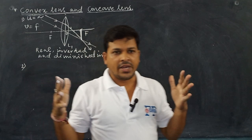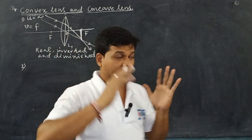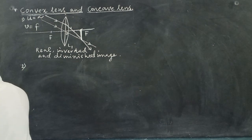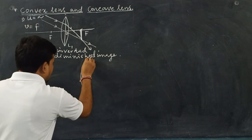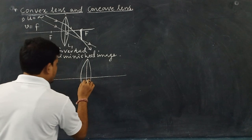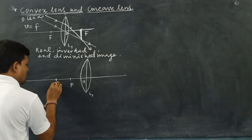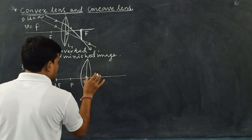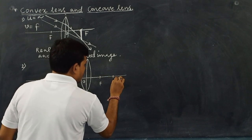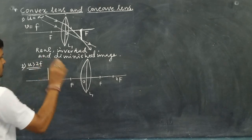When the object moves towards the convex lens, the image moves away from the lens. When object distance decreases, image distance increases. Now in this ray diagram, the object is beyond the center of curvature — beyond twice the focal length. This is the principal axis, O is the optical center, F is the principal focus, and 2F is twice the focal length on both sides. The object is here: U greater than twice the focal length.